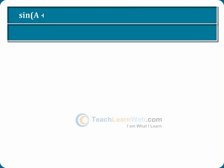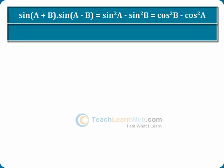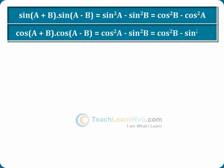sin(A+B)·sin(A−B) equals sin²A minus sin²B, which equals cos²B minus cos²A. cos(A+B)·cos(A−B) equals cos²A minus sin²B, which equals cos²B minus sin²A.